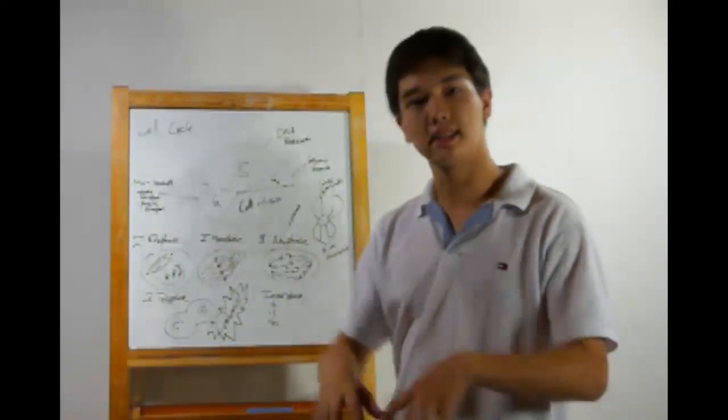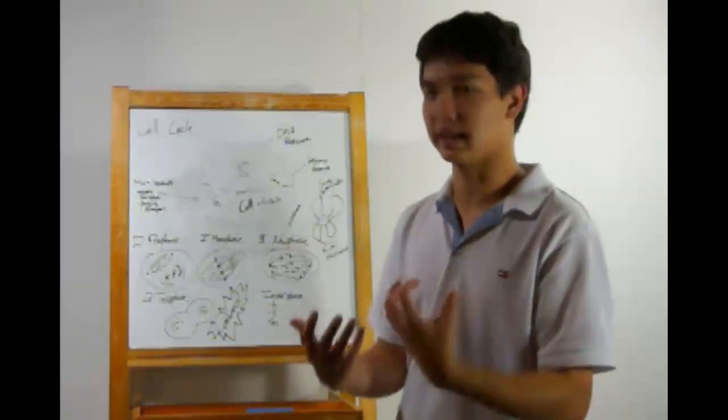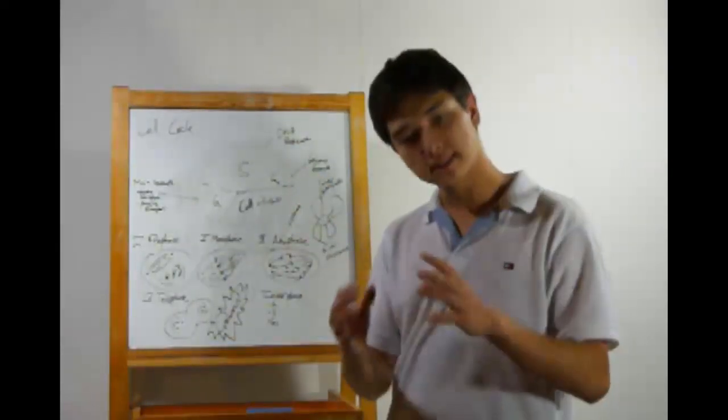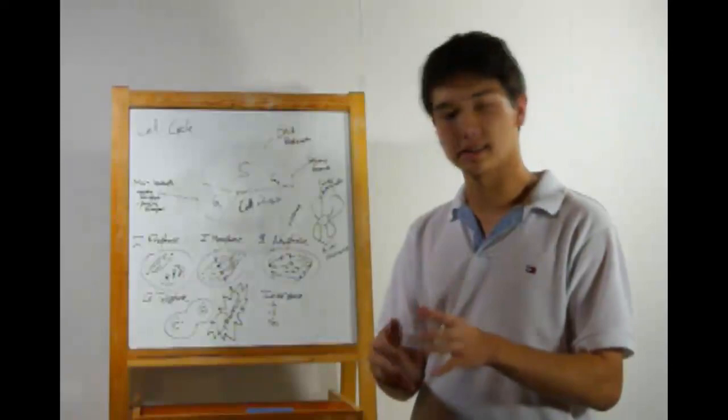In the S phase, DNA copies itself, so that there are two copies and it's ready for cell division. But before that, there's the G2 phase. This is the second growth phase, not as pronounced as the G1 phase, but just a little bit more right before cell division.